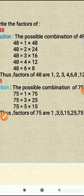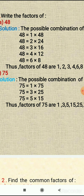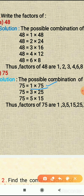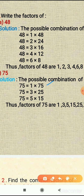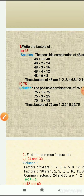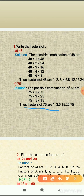For 75, the possible combinations are: first we multiply 1 by 75 — 75 ones are 75. Then the next combination is 3 multiplied by 25 — 25 threes are 75. And the third combination: 5 into 15 — 15 fives are 75. So the factors of 75 are: 1, 3, 5, 15, 25, and 75.